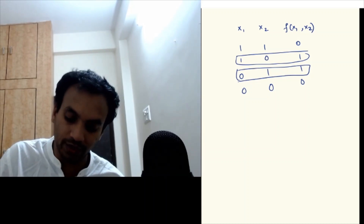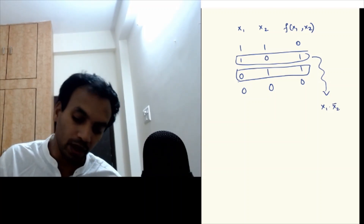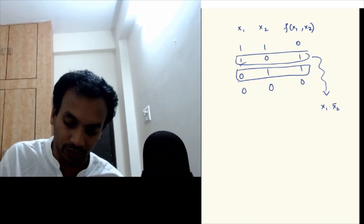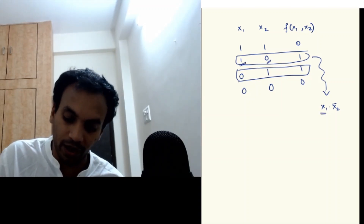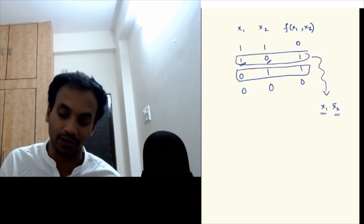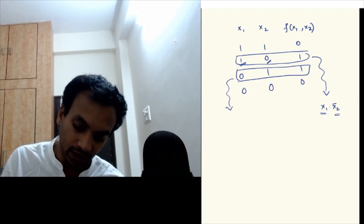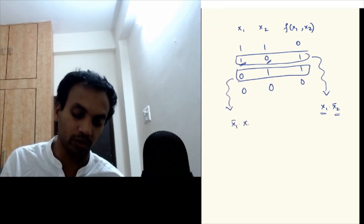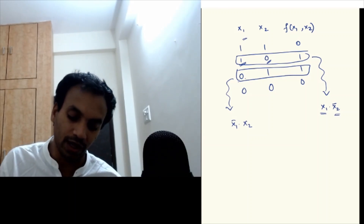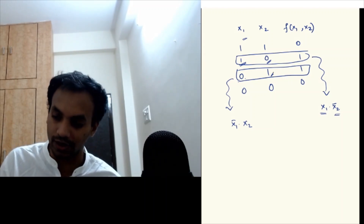The min term corresponding to the second row is x1 times x2 bar. I know this because there is a 1 in place of x1, so I put x1 there, and 0 in place of x2, so I put a bar over x2. And a min term for the third row is x1 bar times x2, by the same logic — if I have a 0 in place of x1, I put a bar over x1, and if I have a 1 in place of x2, I put just x2.